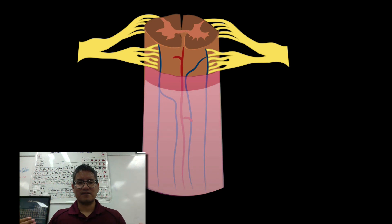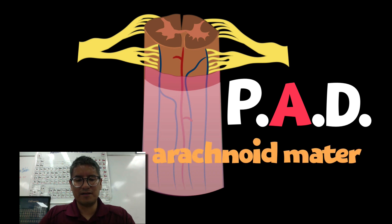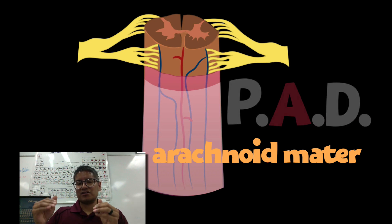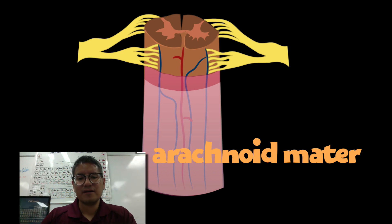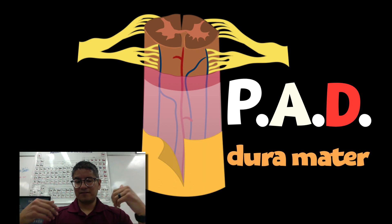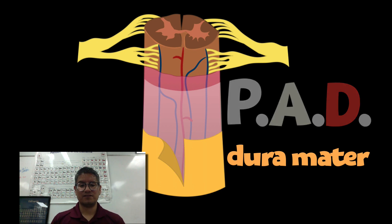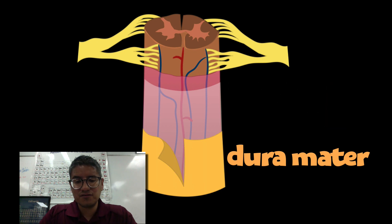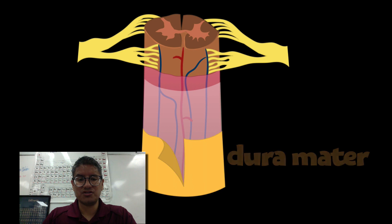Next, A stands for arachnoid mater. It's called arachnoid mater because microscopically — especially when looking at the subarachnoid space — it looks like a spider web. Then D stands for dura mater, which literally means 'hard mother.' The dura mater is a very tough tissue, almost like canvas — very difficult to tear — and it is the third and outermost layer of the meninges.